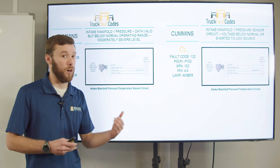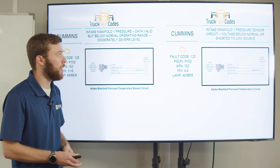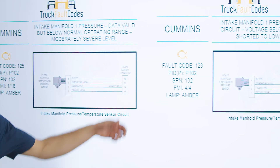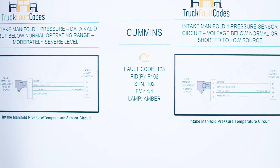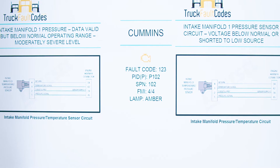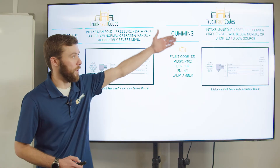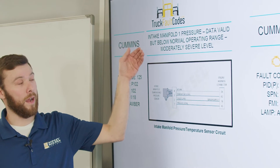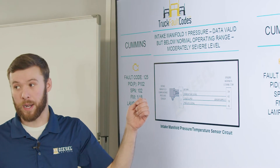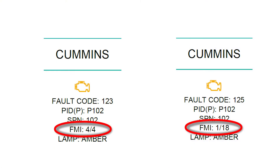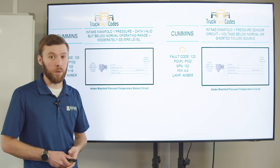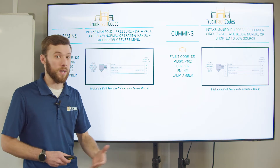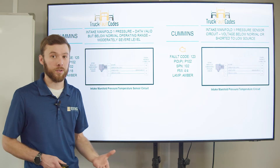So just by looking at the FMI, we can determine whether they're electrical or mechanical faults. Over here we have 'voltage below normal' — electrical fault. Over here we have 'data valid but below normal operating range.' Looking at those FMIs, this tells us that it could be a mechanical fault. In this case we have a pressure sensor for our intake manifold, which would be our boost pressure — so that could be a boost leak, a bad turbo, or maybe a restricted air filter.